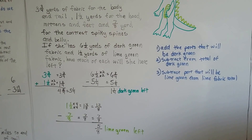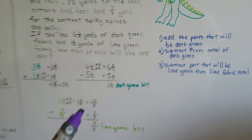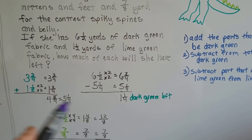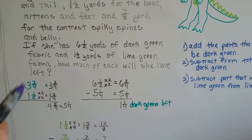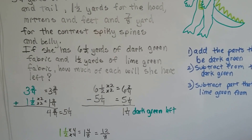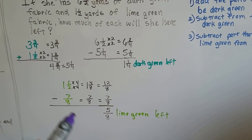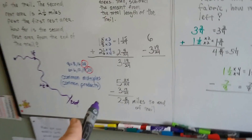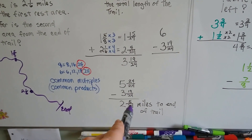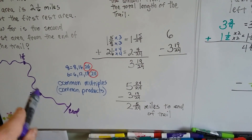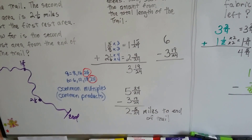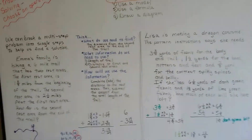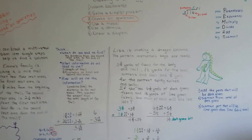How do we check that our answers are right? We can use addition as the inverse operation. The one and one-fourth yards of dark green left, added to the amounts she used, should total six and a half yards. The five-eighths of lime green left, added to what she used, should total one and a half. For the trail problem, the two and five twenty-fourths miles to the end, added to two and one-sixth and one and five-eighths, should total the six-mile trail. That's choosing an operation — just break it into smaller steps.